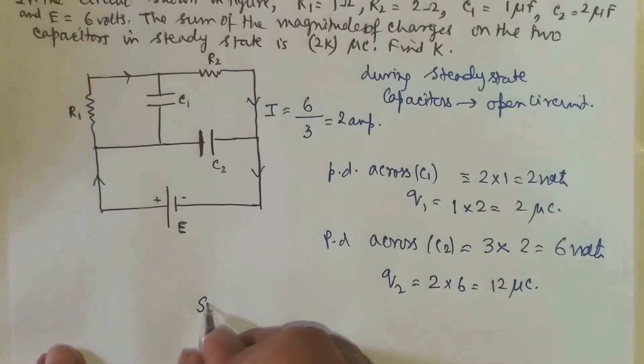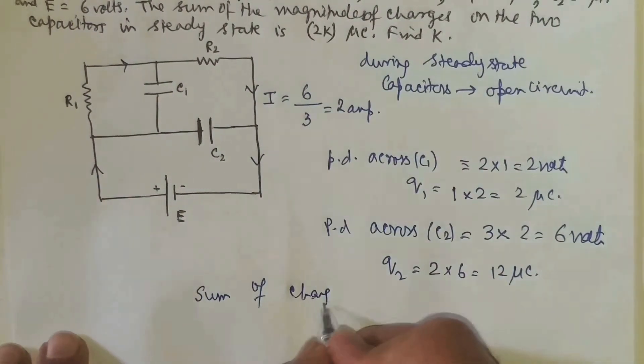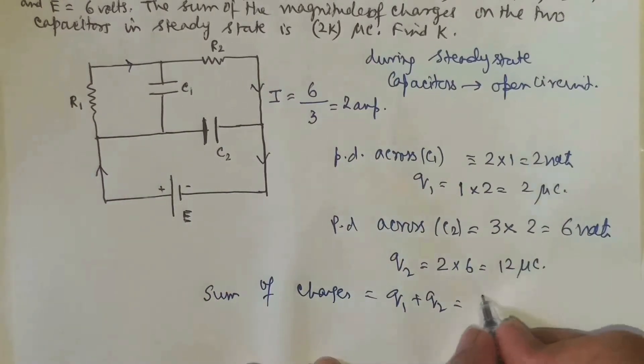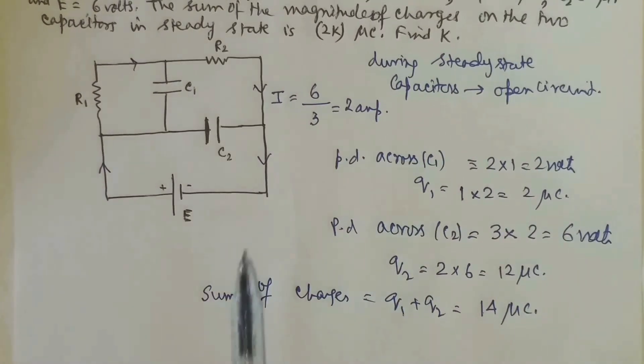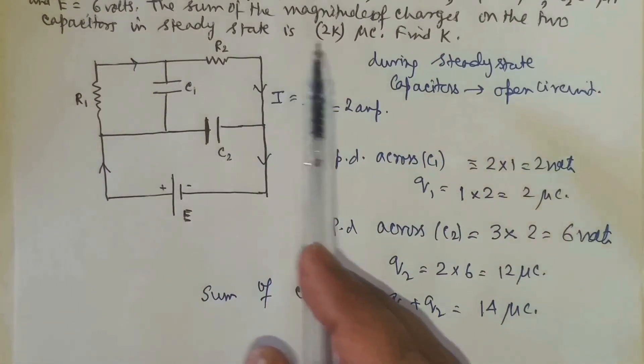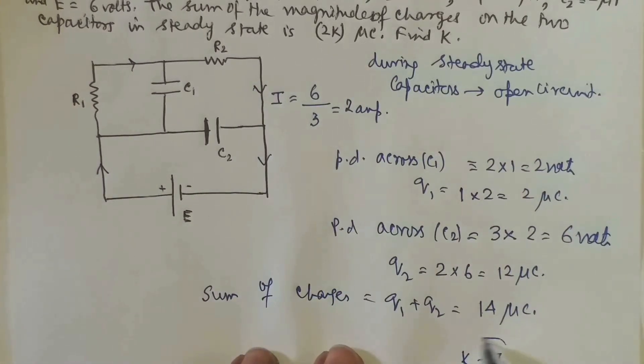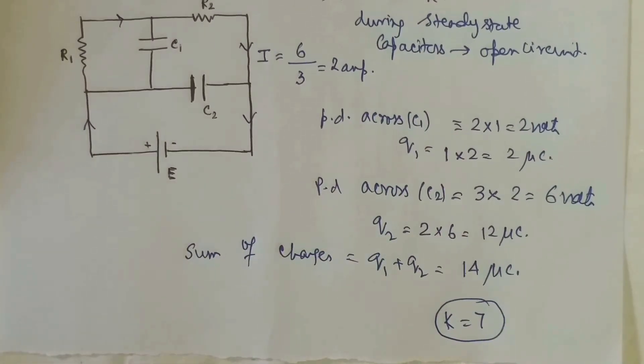So now the sum of the charges. Sum of the charges is equal to Q1 plus Q2. This is 2 plus 12, that is 14 micro coulomb. Now what form they have given? The charge in the steady state is 2K micro coulomb. That is K is equal to 7. It was based on some integer based answer. K is equal to 7.